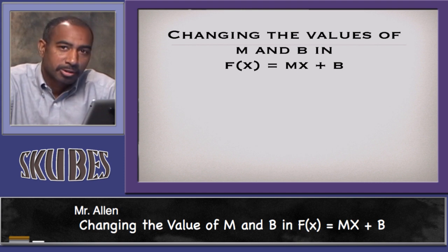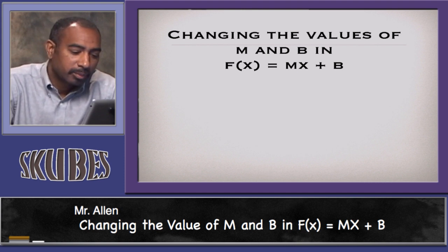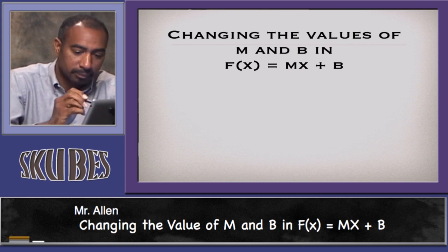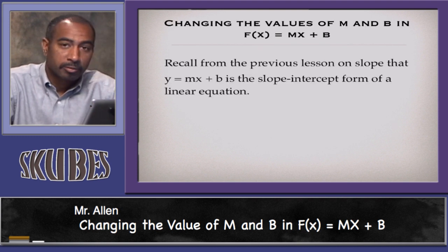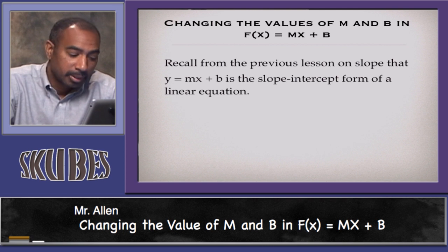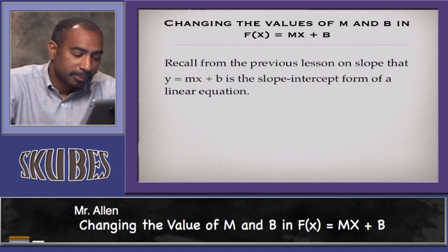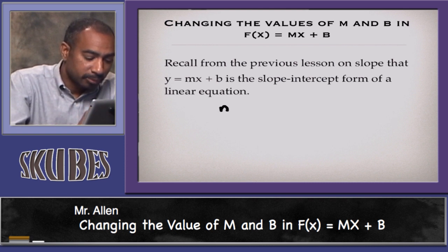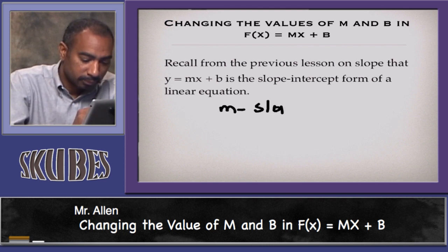Today's lesson is changing the values of m and b in the function f(x) = mx + b. Recall from the previous lesson on slope that y = mx + b is called slope-intercept form, where m represents the slope and b is the y-intercept.